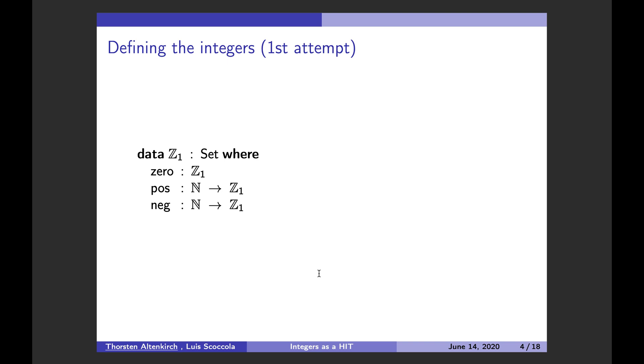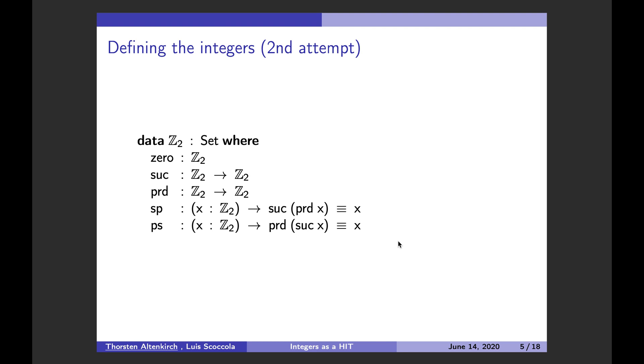So what are the alternatives? Okay, so there is quite a standard representation in math. Integers are represented as pairs of natural numbers. And they're identified, it's a quotient, if the difference is the same. That's one possibility, but coming from type theory, I quite like inductive definitions. And here's an inductive definition of the integers. This is our second attempt, our integers are given by zero, successor, and predecessor. And then I have two equations, that successor and predecessor are inverse to each other.